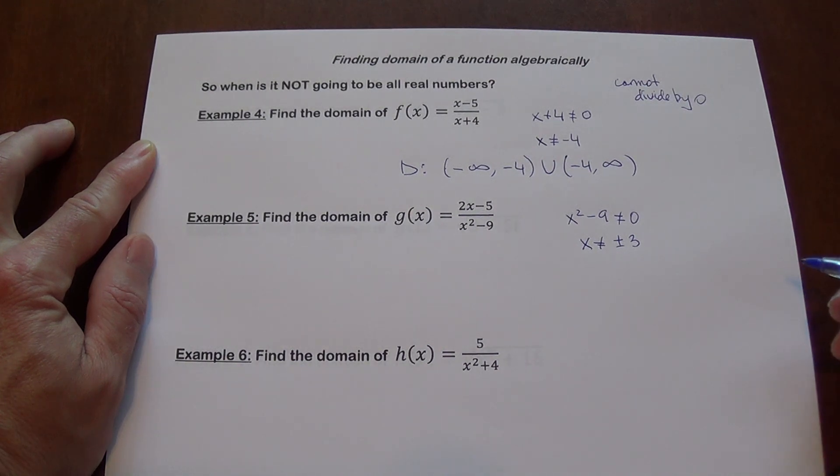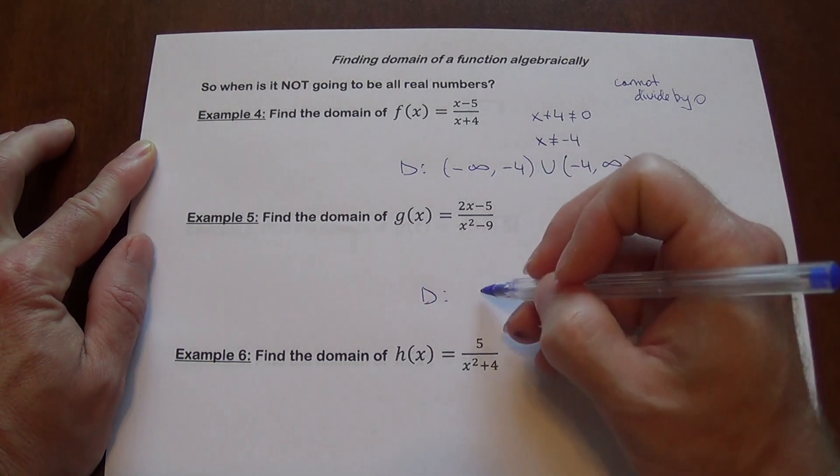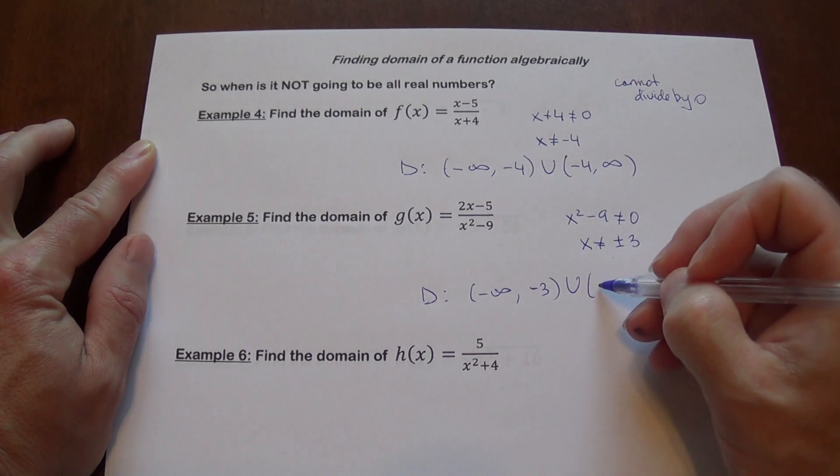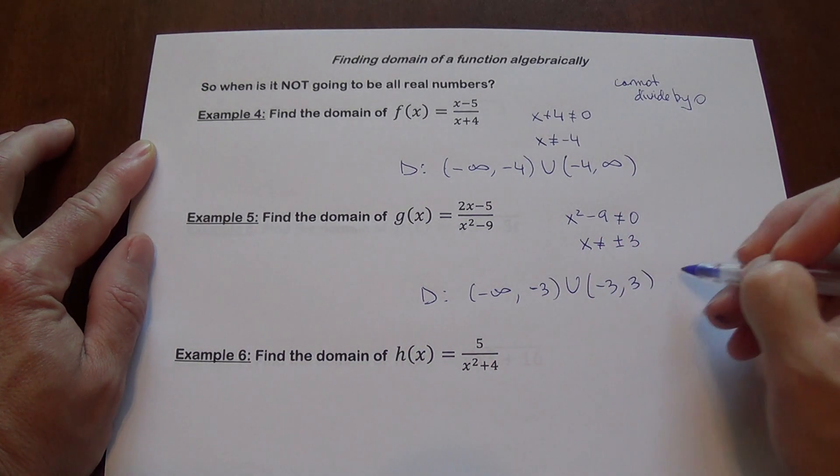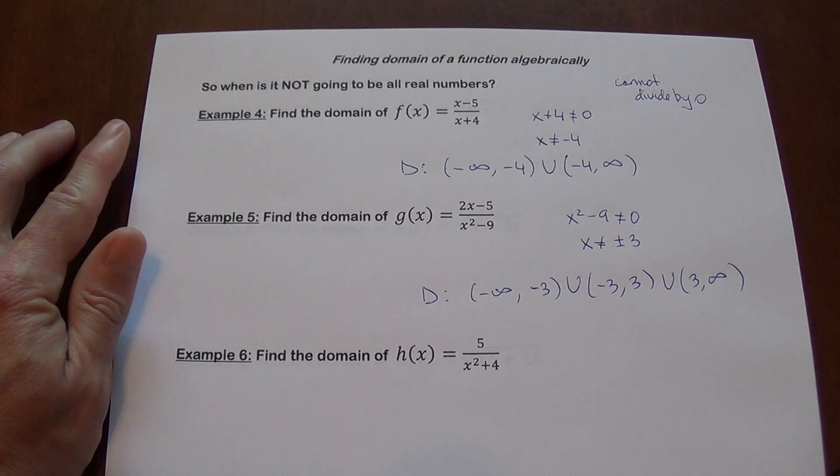So as long as x is not positive 3 or negative 3, you're fine. So for our domain, it's going to be negative infinity to negative 3, and we're going to unite it with negative 3 to 3, and we're going to unite it with 3 to infinity.